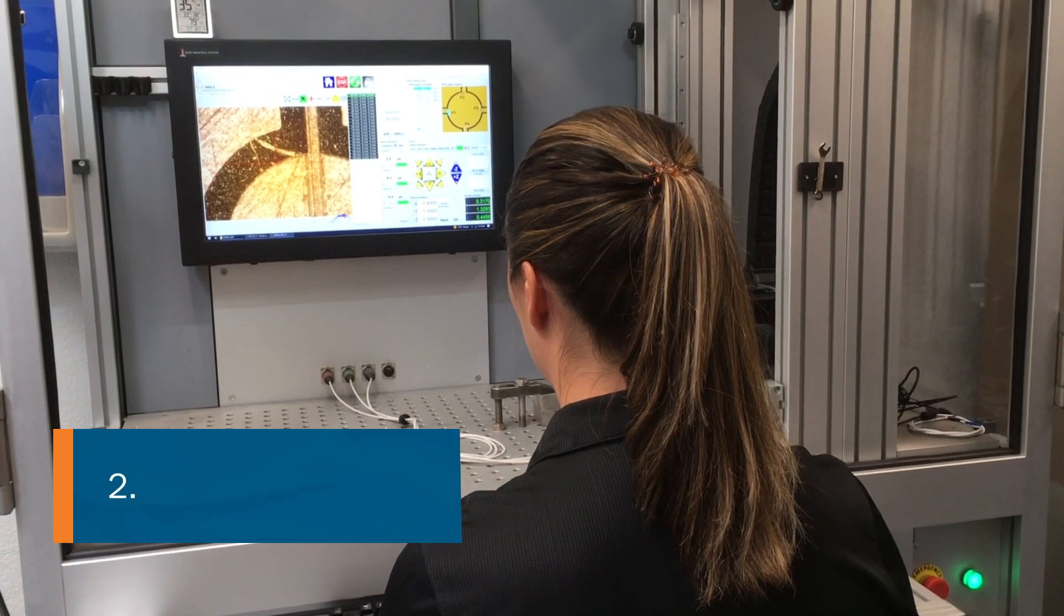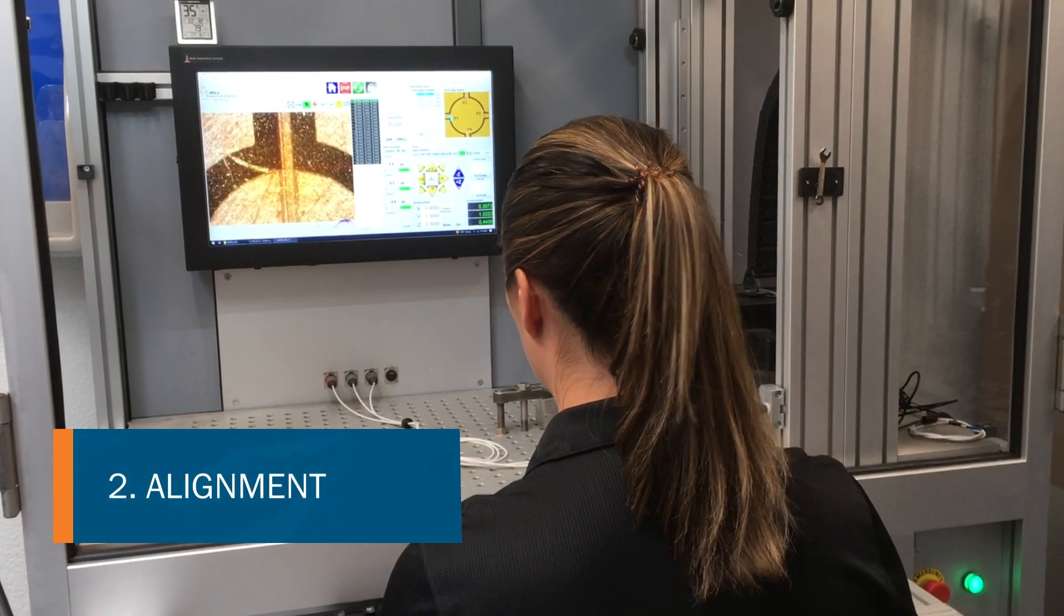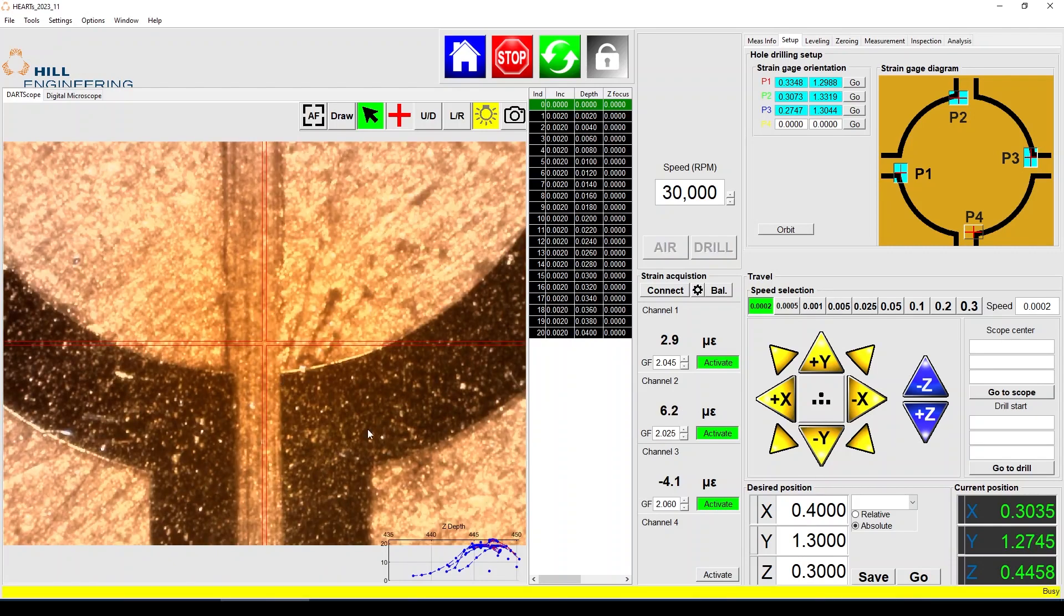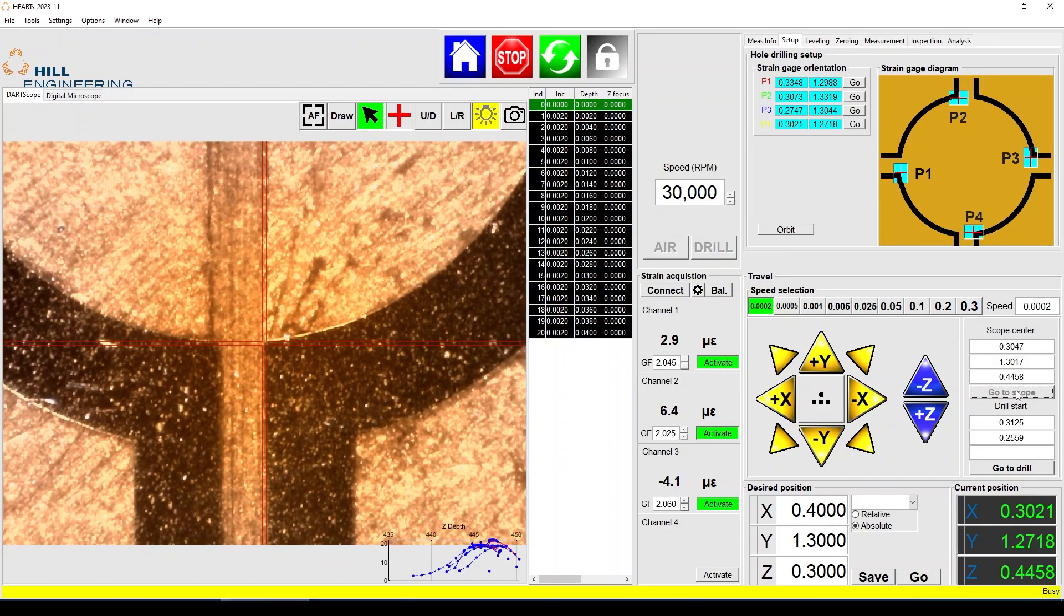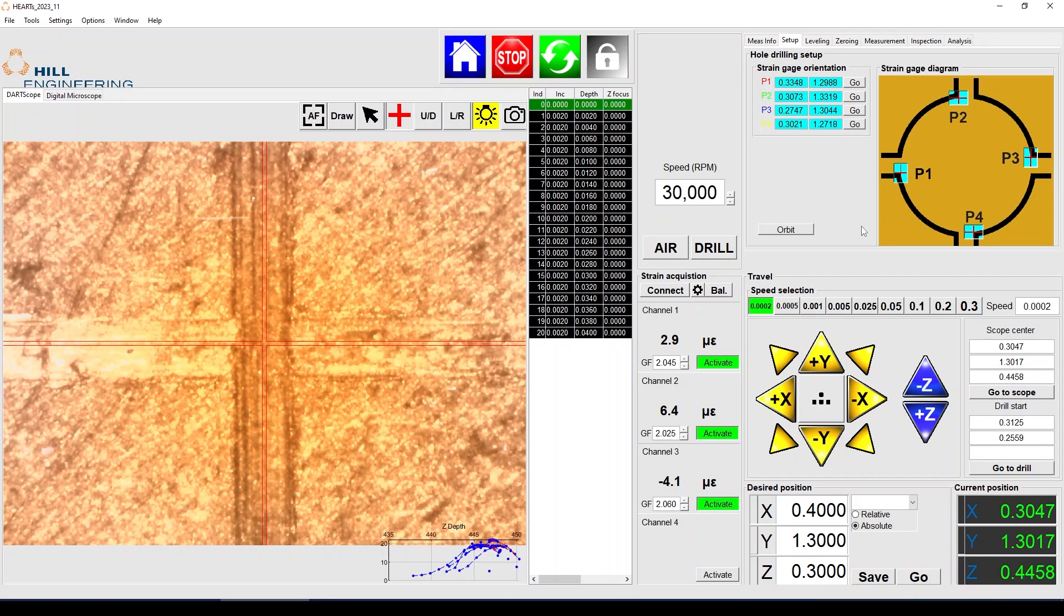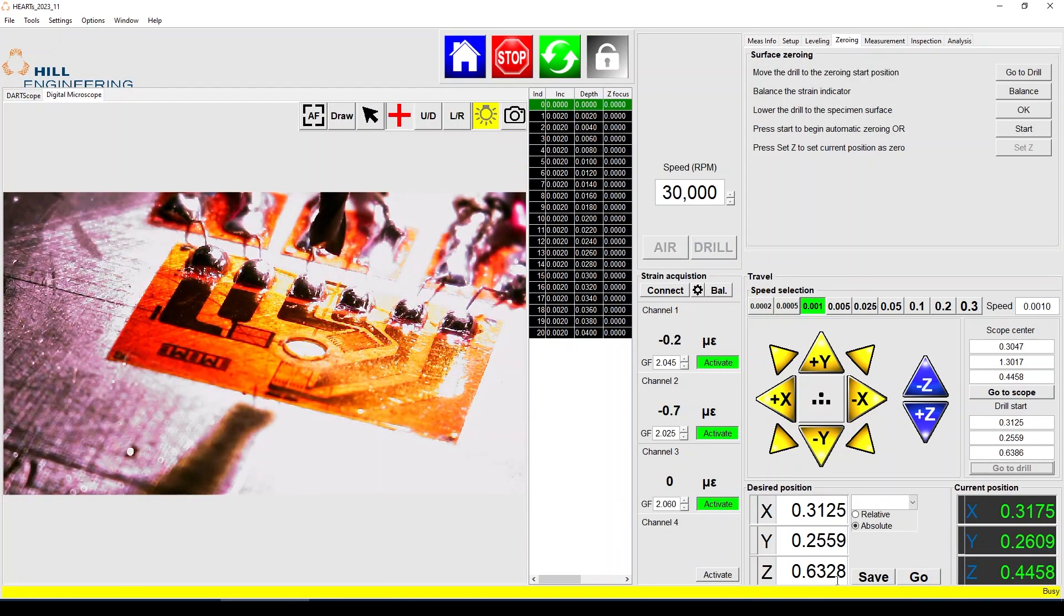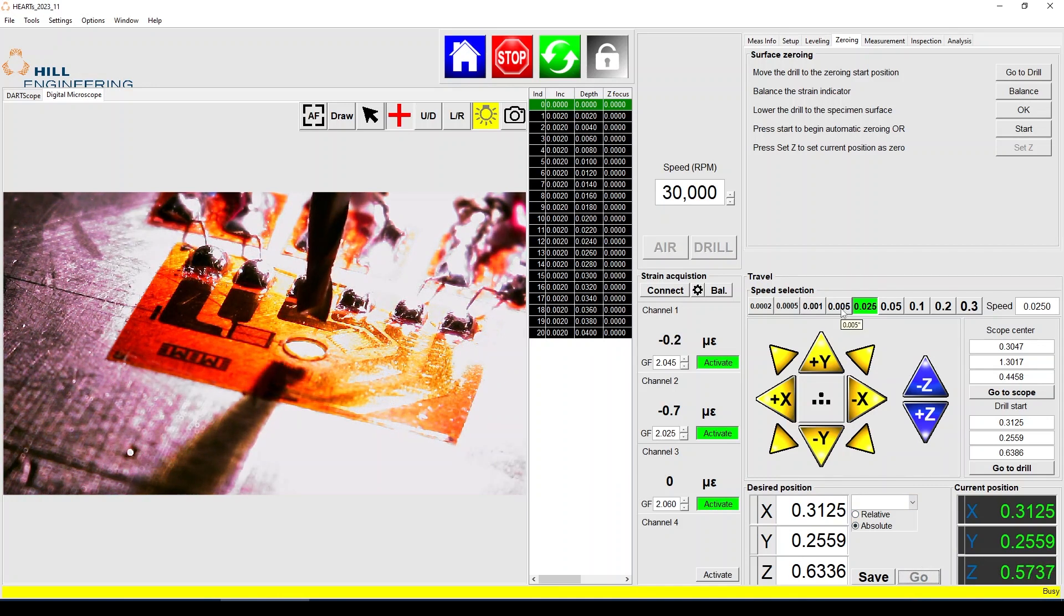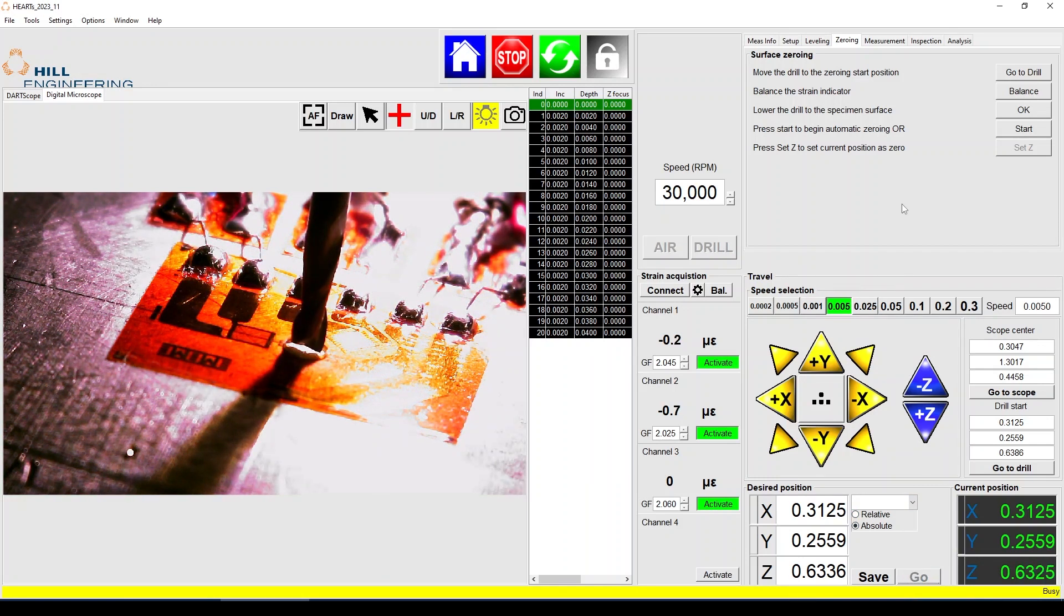The operator then orients the DART such that the drill is perpendicular to the measurement site. Using the DART software, the operator defines the center of the strain gauge rosette. The DART software then guides the operator with step-by-step instructions to determine the zero-depth location, the point at which the cutter is just scratching the specimen surface.